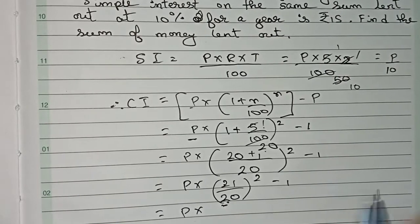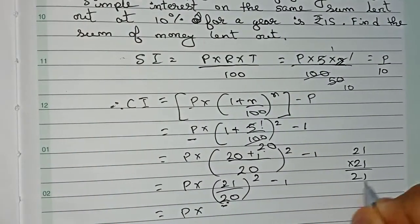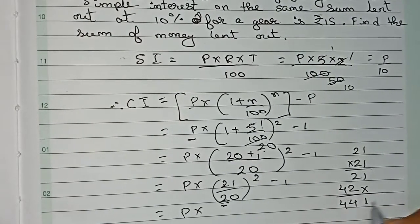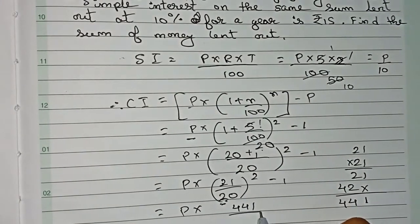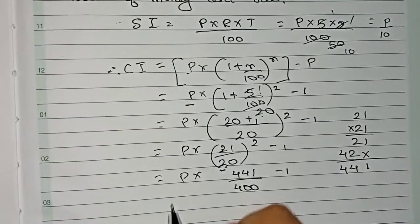Now I have to find the square first. 21 square, 21 × 21 equals 441. So 21 square is 441. It becomes 441/20 square, which is 400, minus 1.